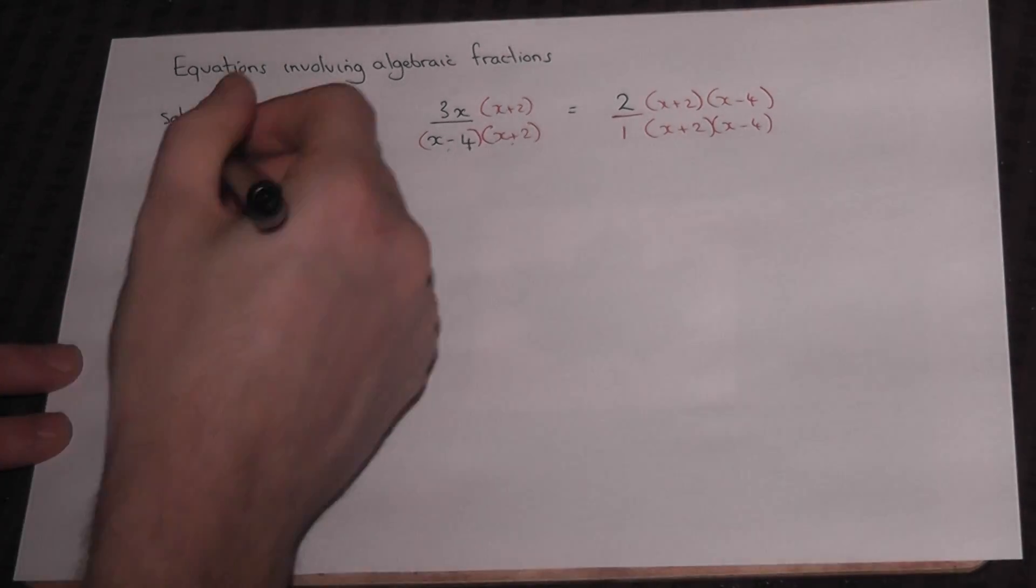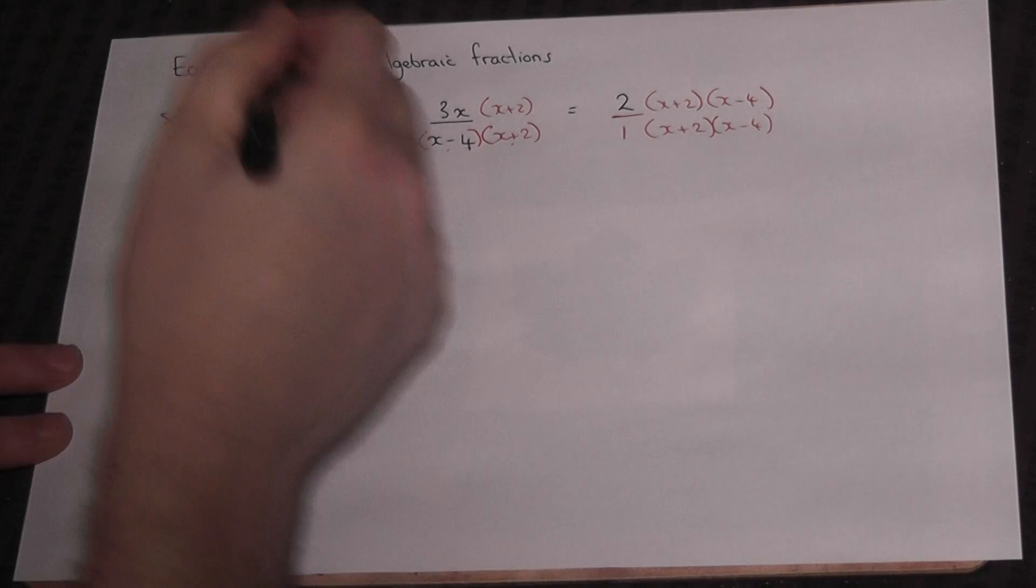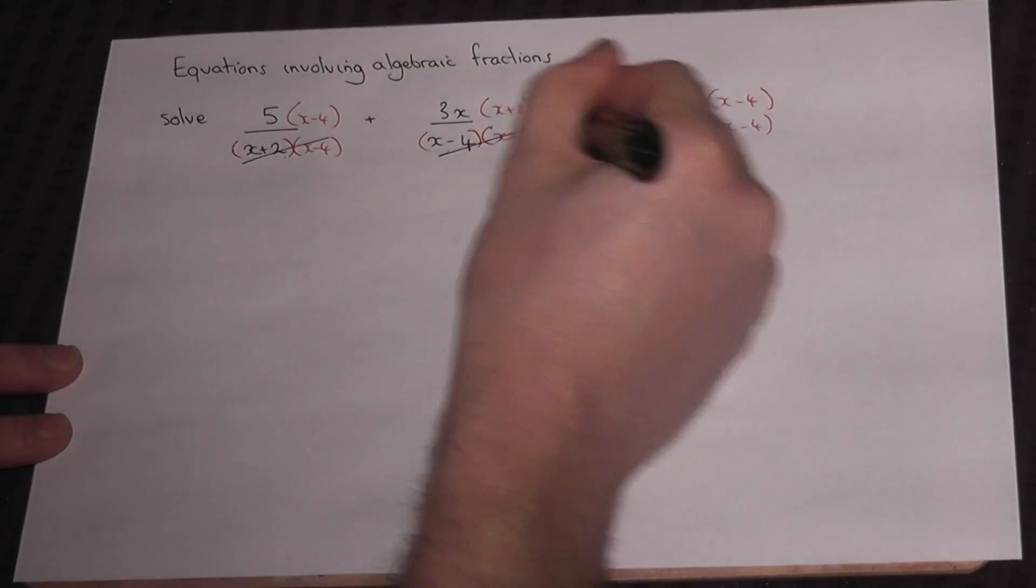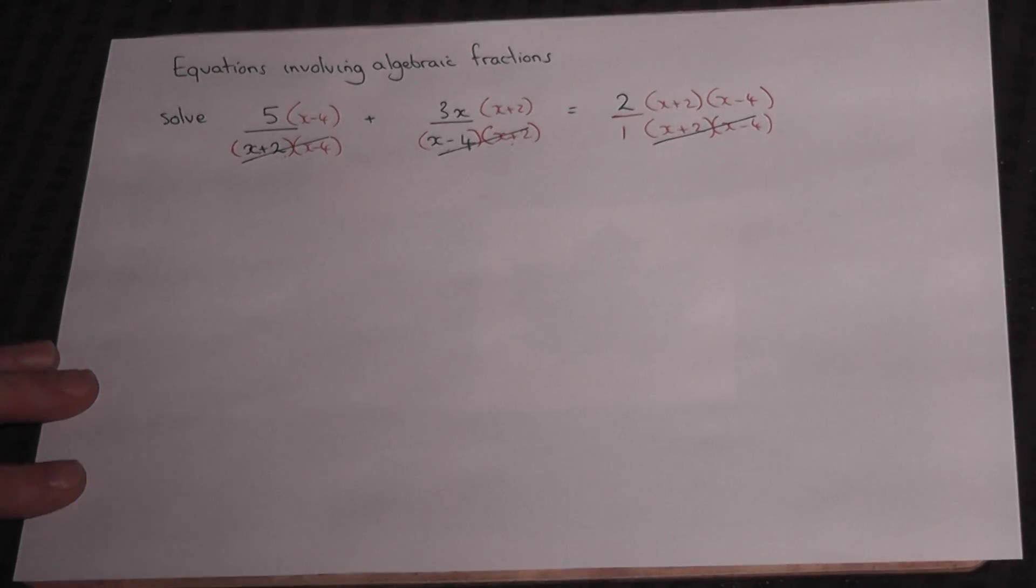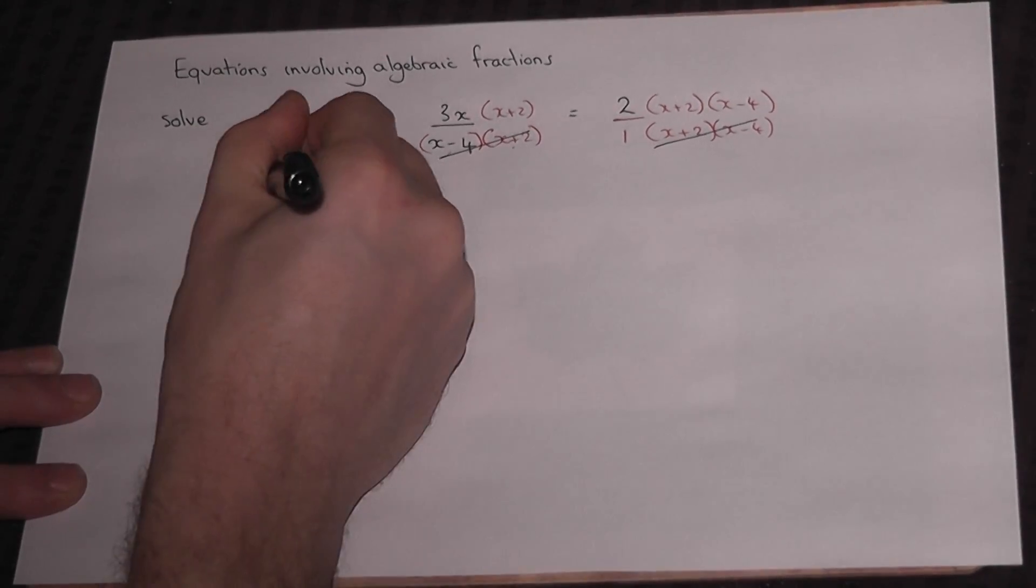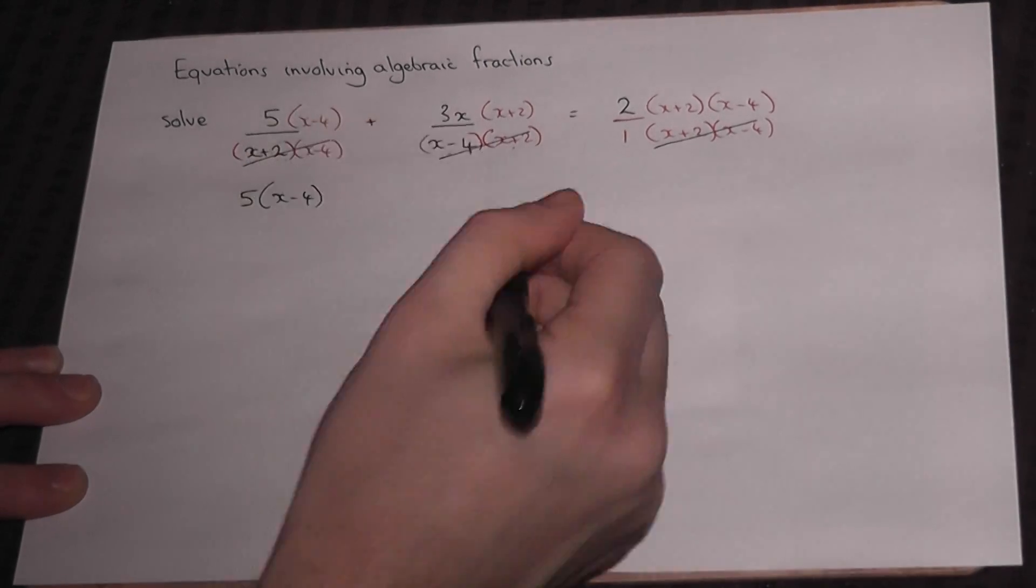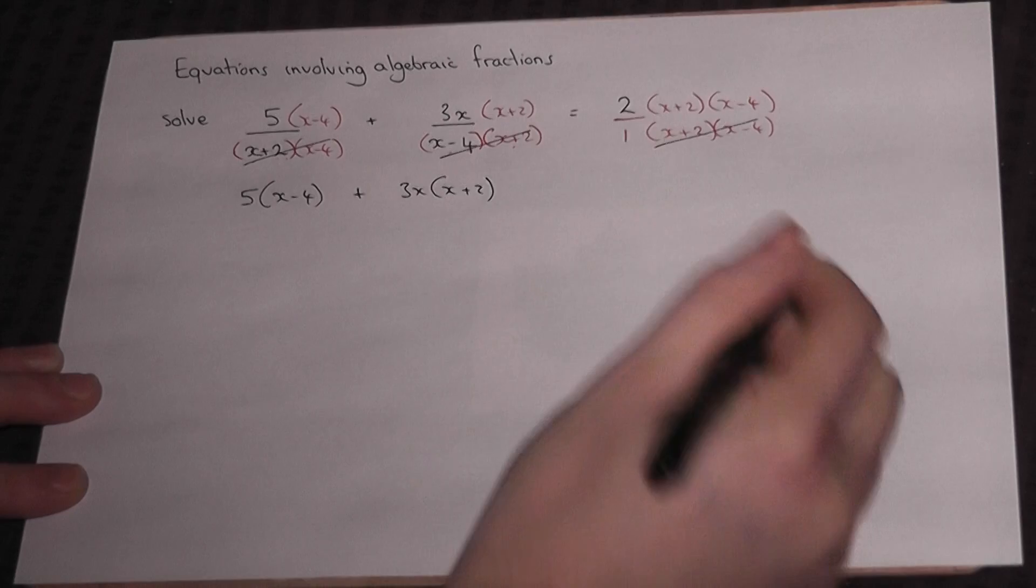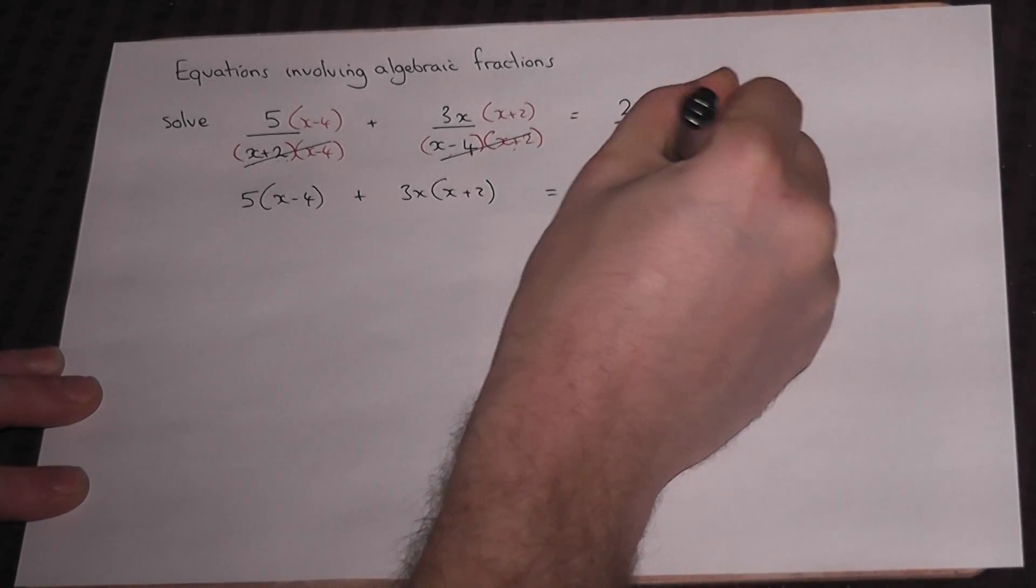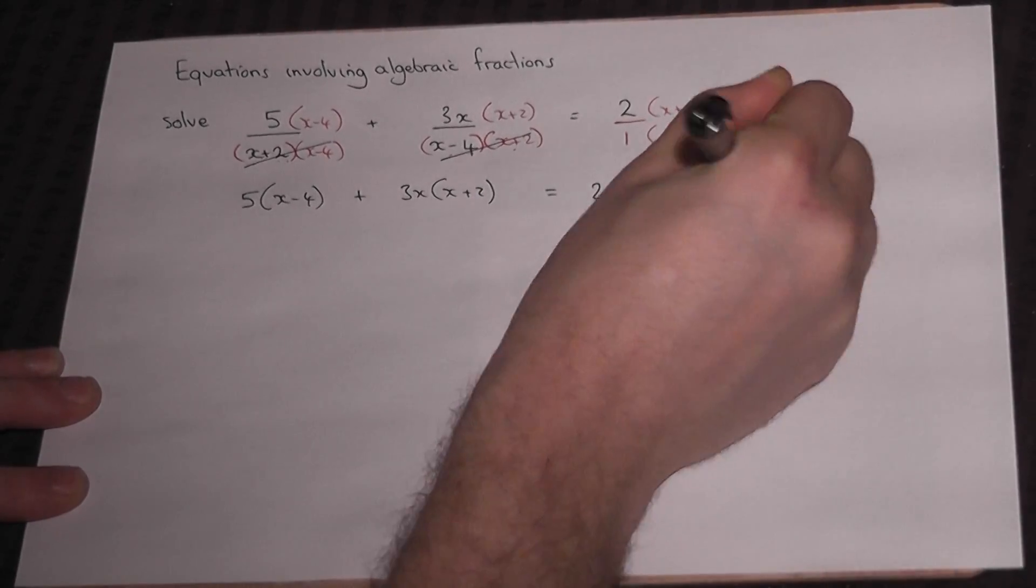So I can now just cancel off the denominators because it's an equation. I'm left with 5x minus 4 plus 3x times x plus 2 equals 2 times x plus 2 times x minus 4.